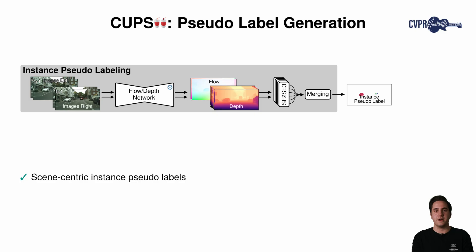To generate unsupervised panoptic pseudolabels, we first perform instance pseudolabeling by detecting moving objects. Using an off-the-shelf unsupervised dense correspondence network, depth and flow are estimated. Lifting these to scene-flow, instance masks are generated using an assembling-based scene-flow to SE3 motion clustering, assuming rigid motions. Merging and filtering masks yield scene-centric instance pseudolabels.